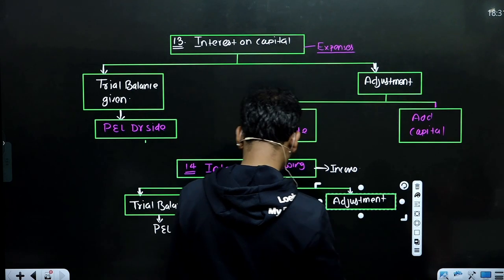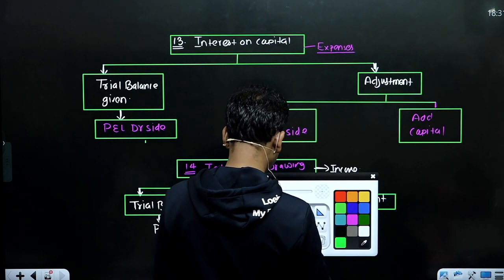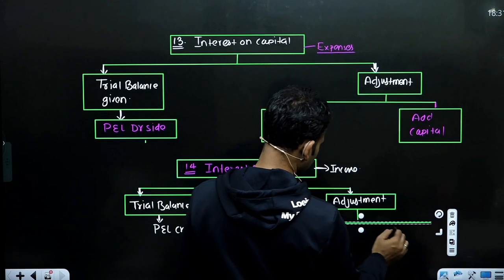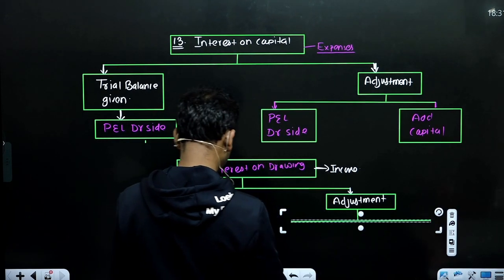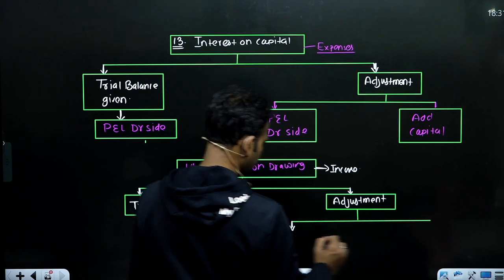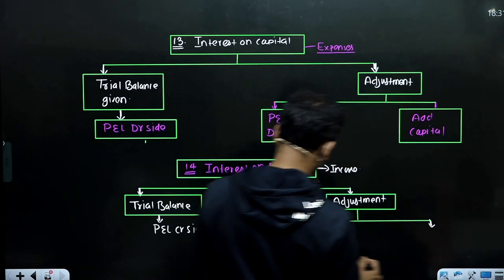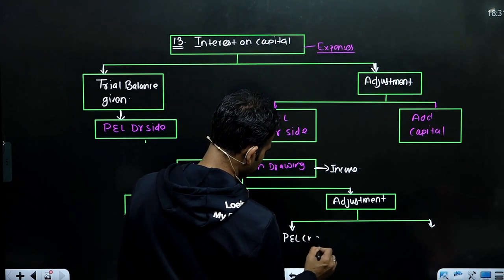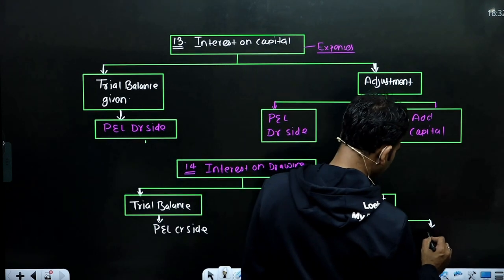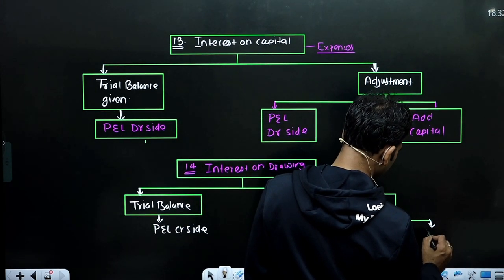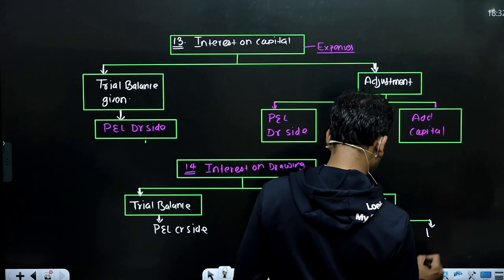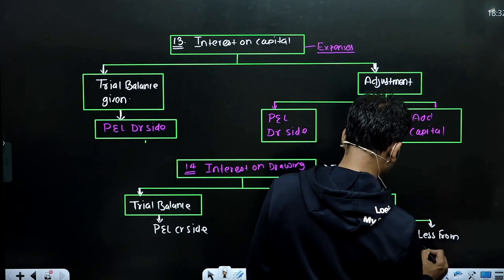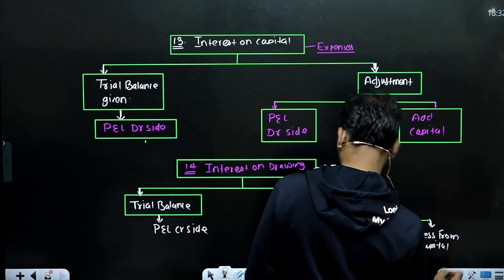अगर adjustment में हुआ तो दो जगह जाएगा - एक चला जाएगा P&L के credit side, और एक चला जाएगा capital से less होगा, यानी capital में से minus हो जाएगा।